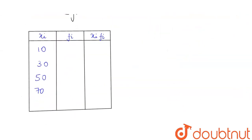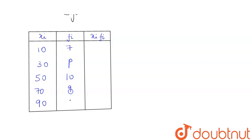For each we are given the frequencies as 7, p, 10, 9, and 13. So for finding xi into fi, we will multiply these. This will become 70, 30p, 500, 630, and 1170.